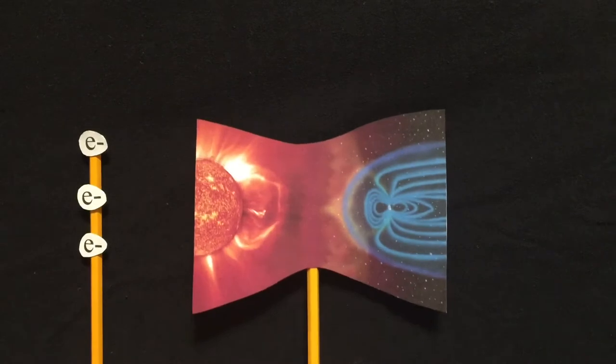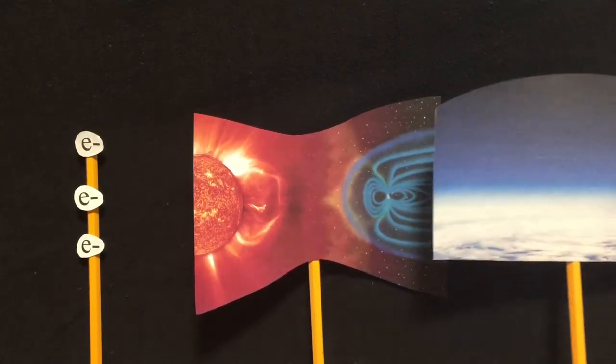Using Birkeland's research, we are able to determine three main components to create the aurora. We need charged solar particles, Earth's magnetic field, and Earth's atmosphere.